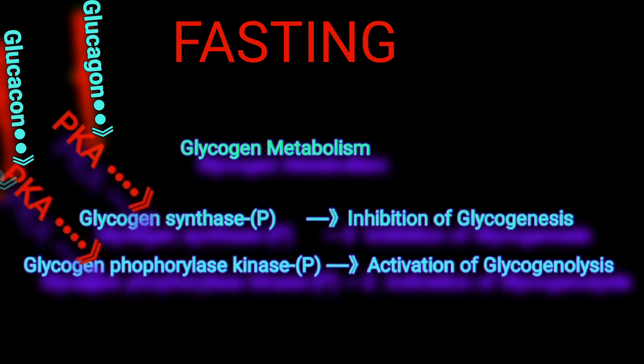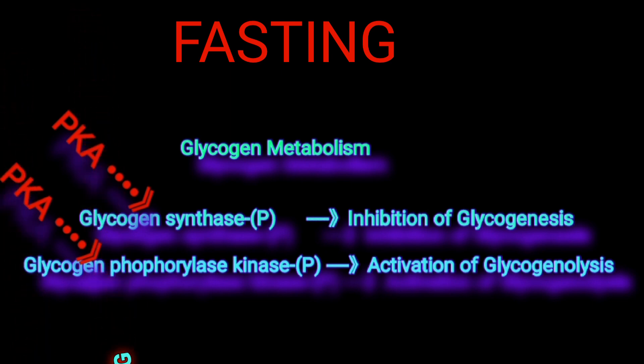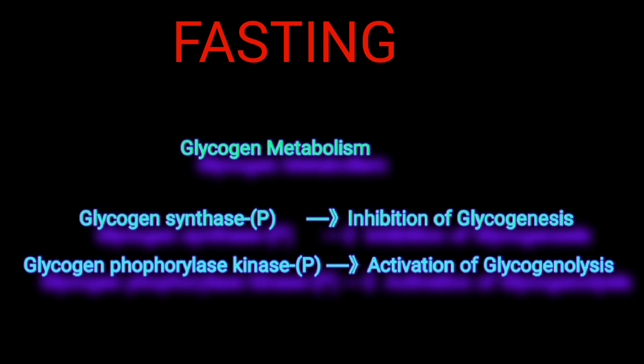so glycogen synthesis is inhibited. On the other hand, PKA will phosphorylate glycogen phosphorylase kinase, which in turn becomes activated and can phosphorylate glycogen phosphorylase, activating the latter enzyme for the hydrolysis of glycogen.